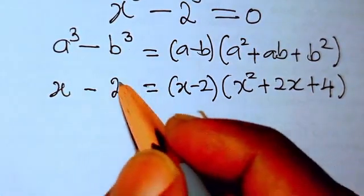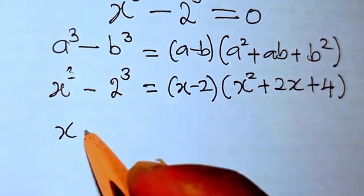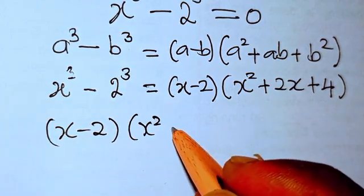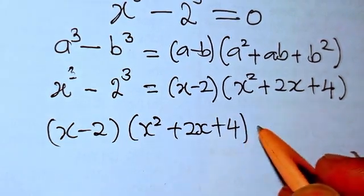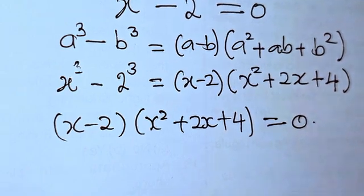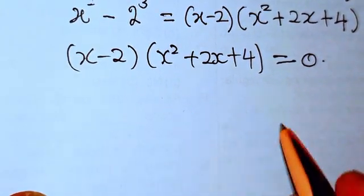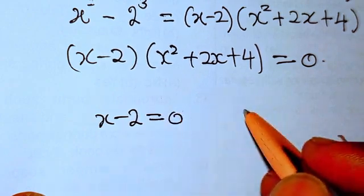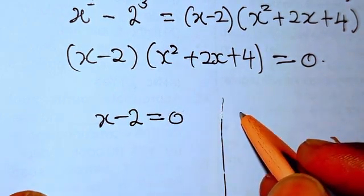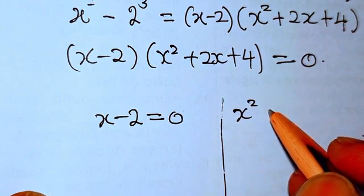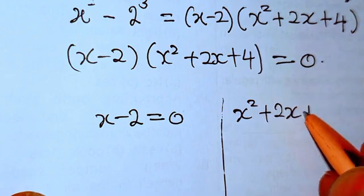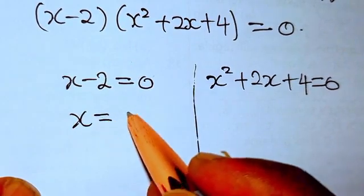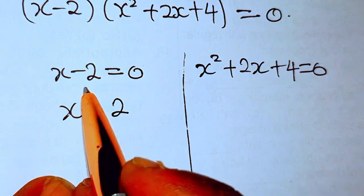We find that (x minus 2)(x squared plus 2x plus 4) equals 0. From here we have x minus 2 equals 0, or x squared plus 2x plus 4 equals 0. From the first factor, x equals 2 by transposing the minus 2.